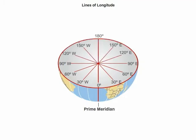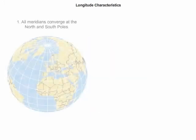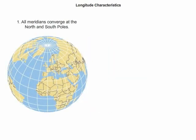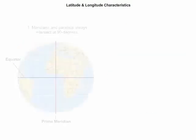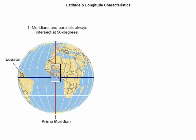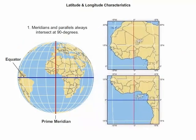The 180th meridian is directly opposite the prime meridian. The visual characteristics of meridians include all meridians converge at the north and south poles. Any two meridians are the farthest apart at the equator. The distance between them decreases towards the poles. Notice that meridians and parallels always intersect at 90 degrees.